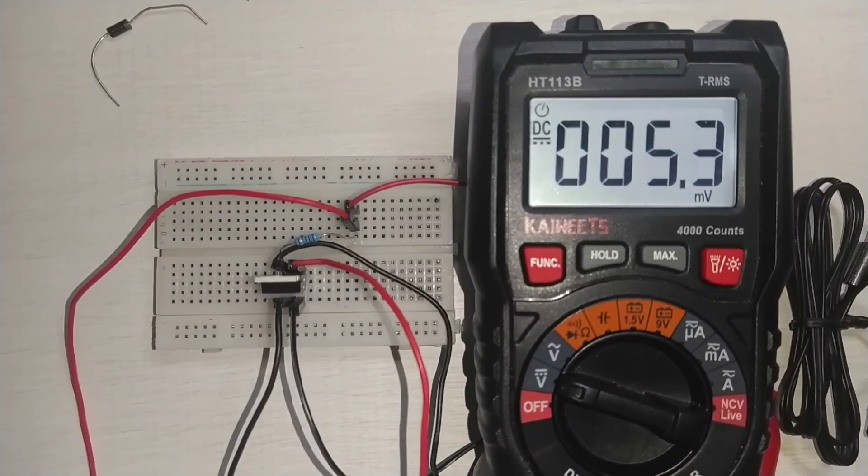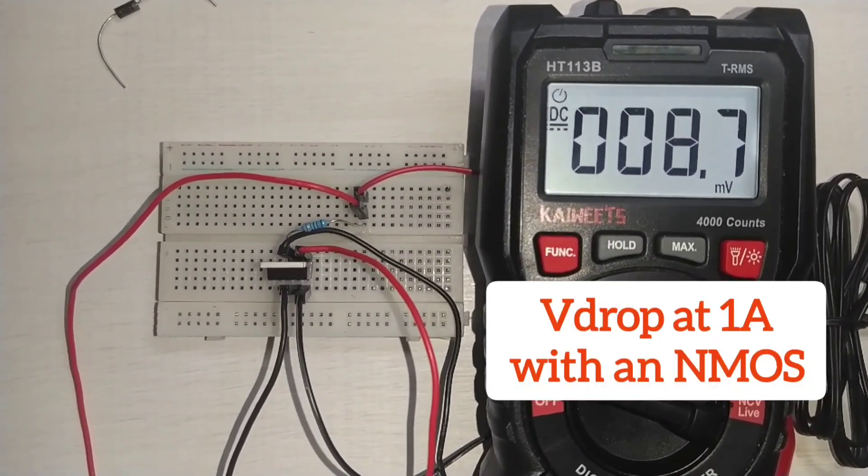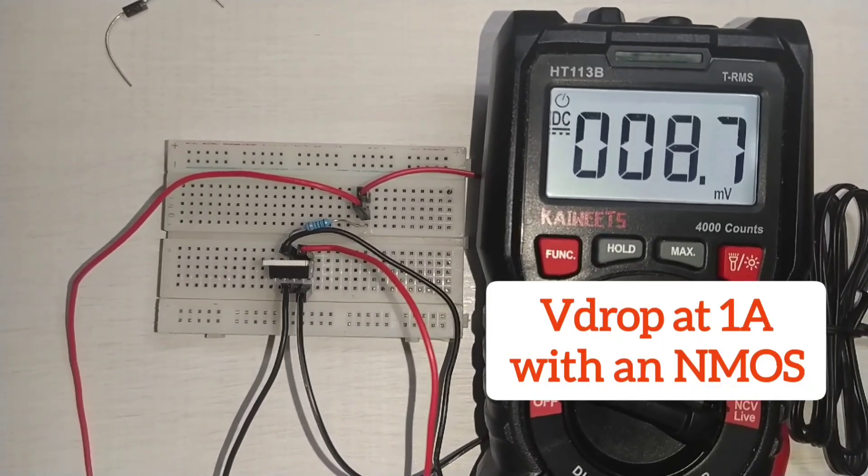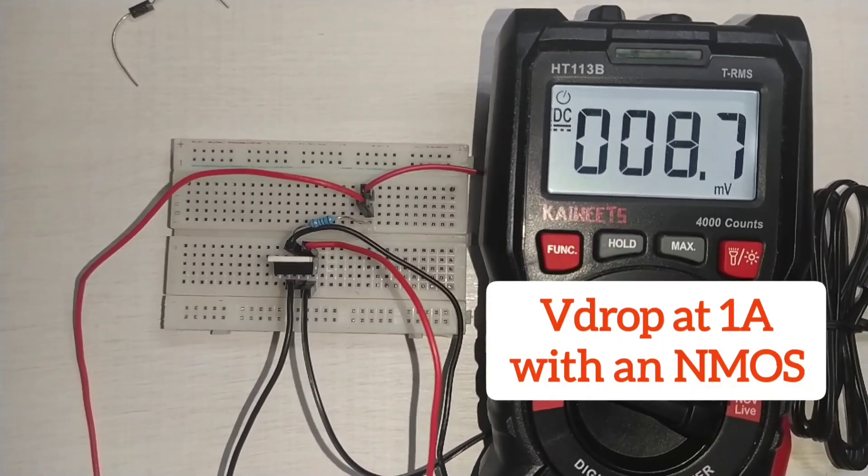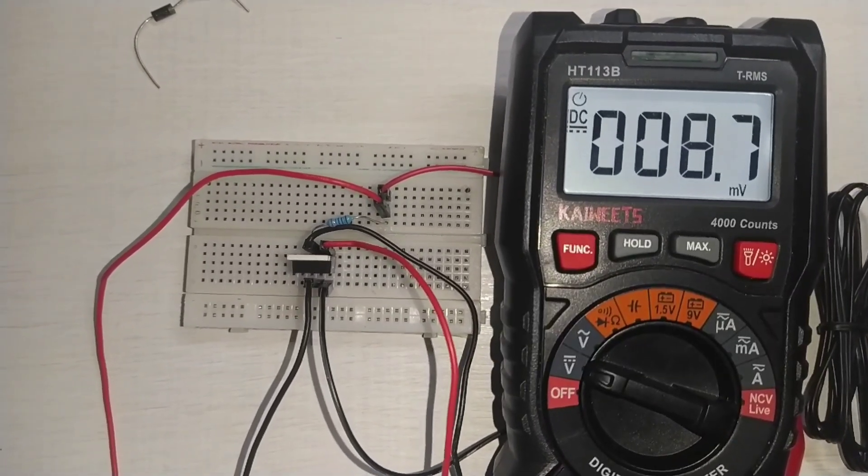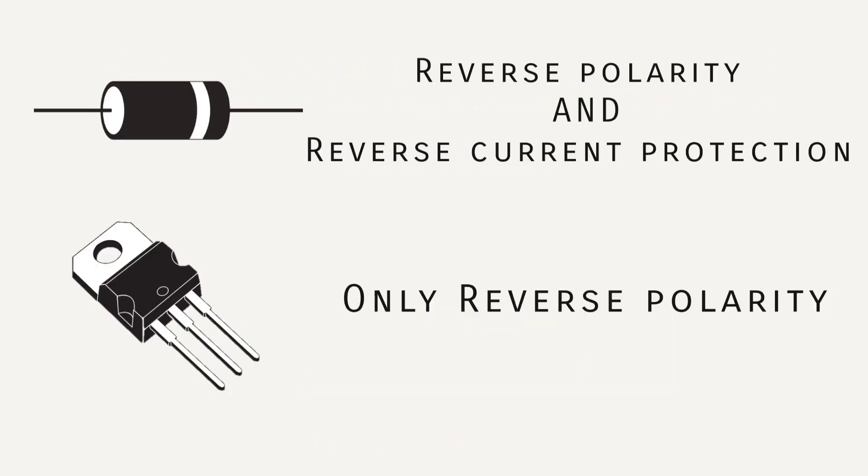Now this reverse polarity protection circuit offers really low voltage drop, which depends on the RDS on of your MOSFET times the current. It's also reliable and can be used in low voltage applications as long as you pick the right MOSFET. I don't see any big disadvantage on this. Just remember that this works well as reverse polarity protection but does not help with reverse current protection.